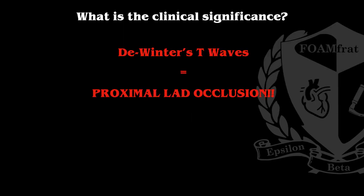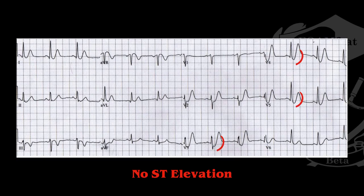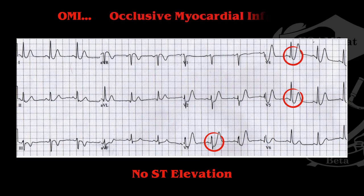What is the clinical significance of this? A DeWinter's T wave means that this is a proximal LAD occlusion, which means we are activating the cath lab for these patients. What's special about this pattern is there's actually no ST elevation. So this falls under the category of an OMI, or occlusive myocardial infarction. These patients are not going to meet traditional ST elevation criteria, but they still have coronary occlusion and need the cath lab activated and to be sent to PCI.